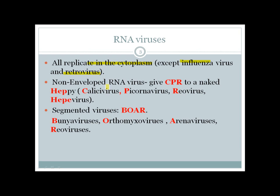Some RNA viruses have a non-enveloped capsid — remember giving CPR to a naked hippie: Calicivirus, Picornavirus, and Reovirus (CPR), and also Hippie for Hep E virus. Some RNA viruses also have a segmented genome, remembered by the mnemonic BOAR: Bunyavirus, Orthomyxovirus, Arenavirus, and Reovirus.